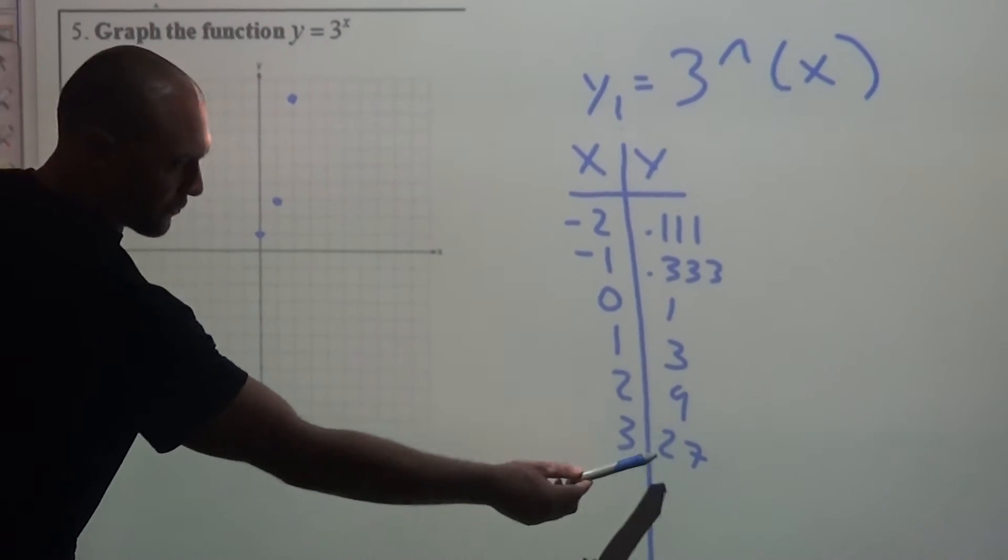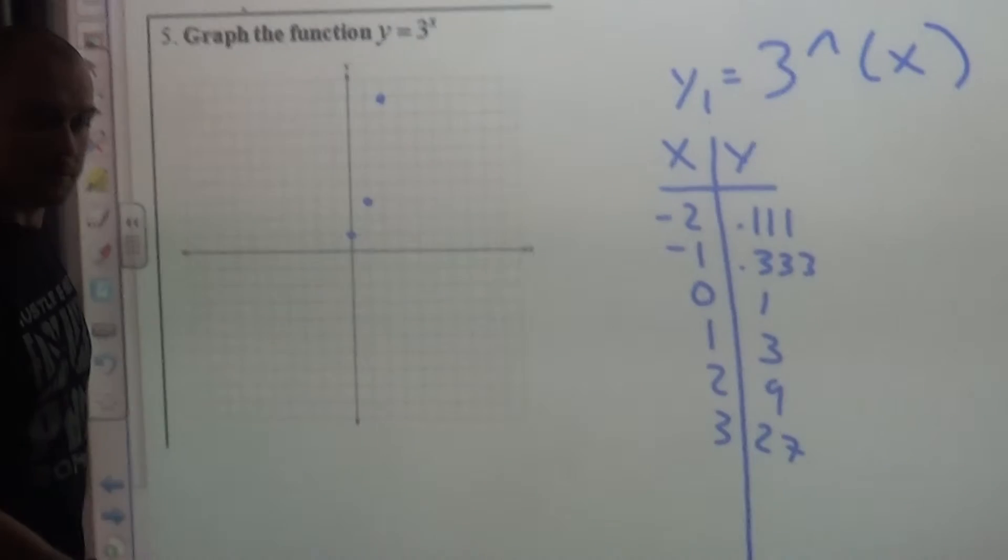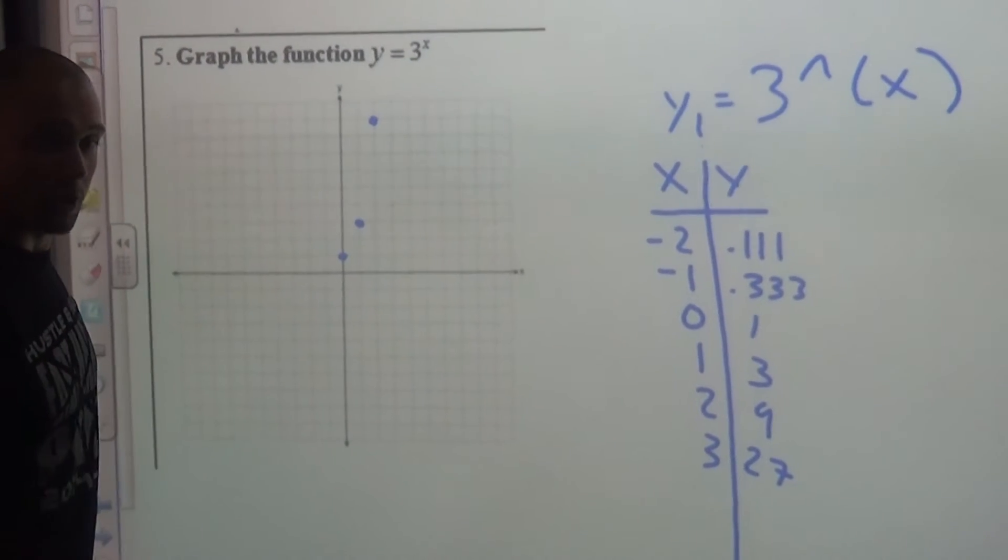Now, a couple things you'll notice here. 327 doesn't fit. Don't worry about it. If it doesn't fit, you've got to acquit the number.